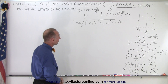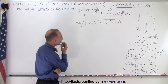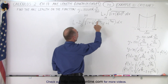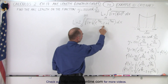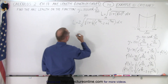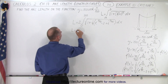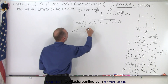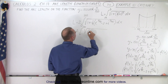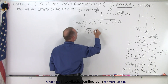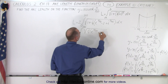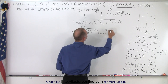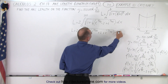Notice that one quarter times negative 2 is minus one half; added to the 1 that becomes plus one half. Factoring out one quarter again, we end up with L equals 2 times the integral from 0 to 100 of the square root of one quarter times the quantity e to the x over 75 plus 2 plus e to the minus x over 75, all times dx.